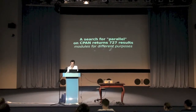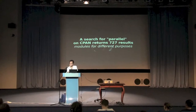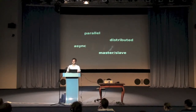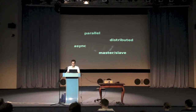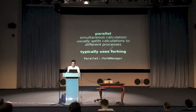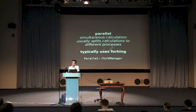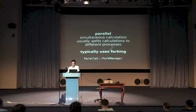A search on CPAN for 'parallel' returns a lot of results. Of these 700 results, you have around 100 modules which deal with parallelism more or less, but they serve different purposes. What I mean when I say parallel is simultaneous calculation — I have something that is calculating all the time — and this usually means splitting a problem to different processes, typically using forking. There are, apart from the fork function, some basic modules which help you here.